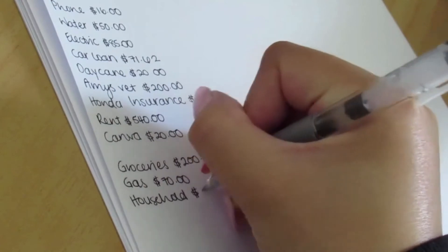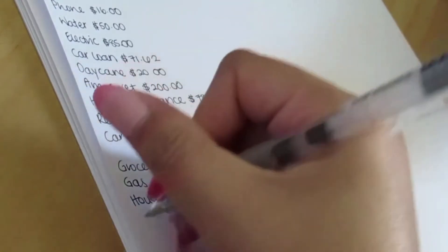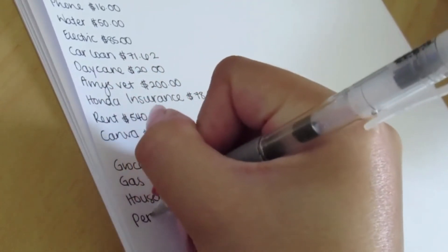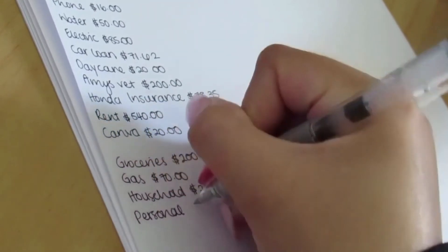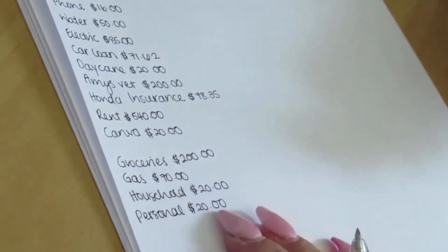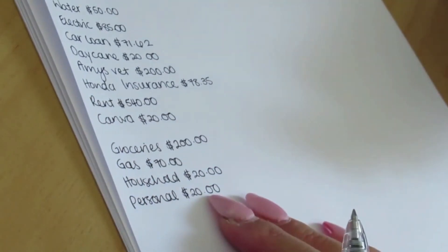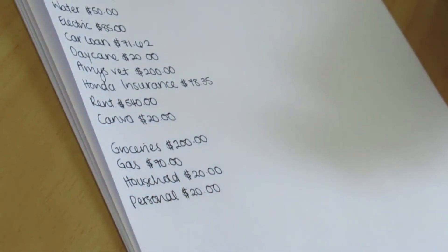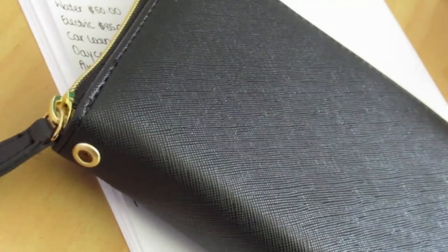I also like to budget for household right now, and that's $20 a week. Then I also like to give myself personal money, which is $20 a week as well.